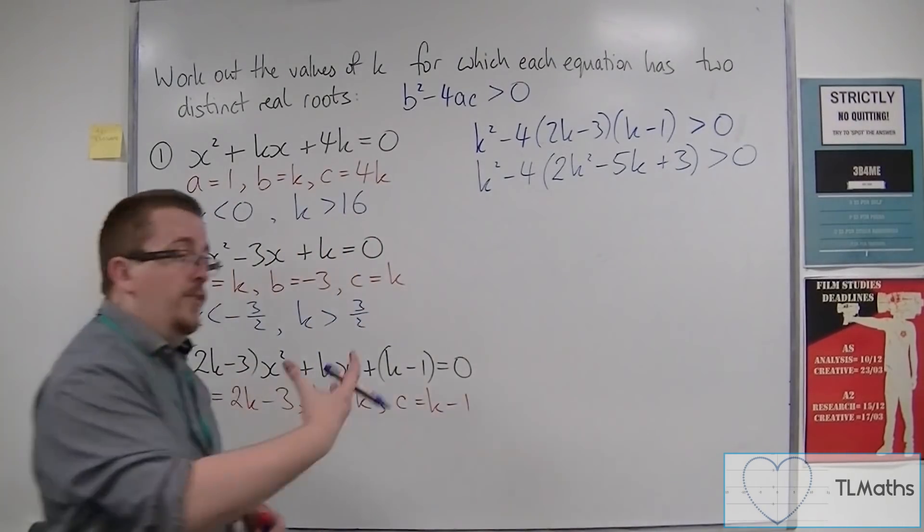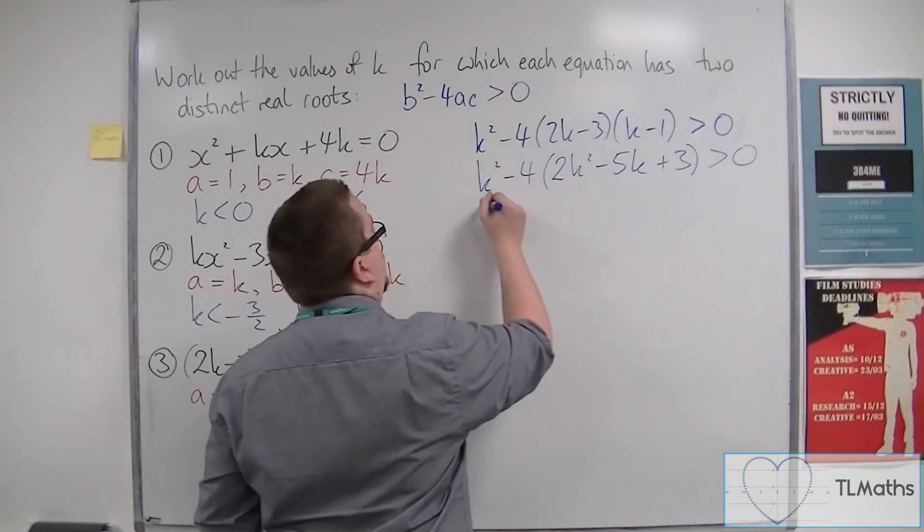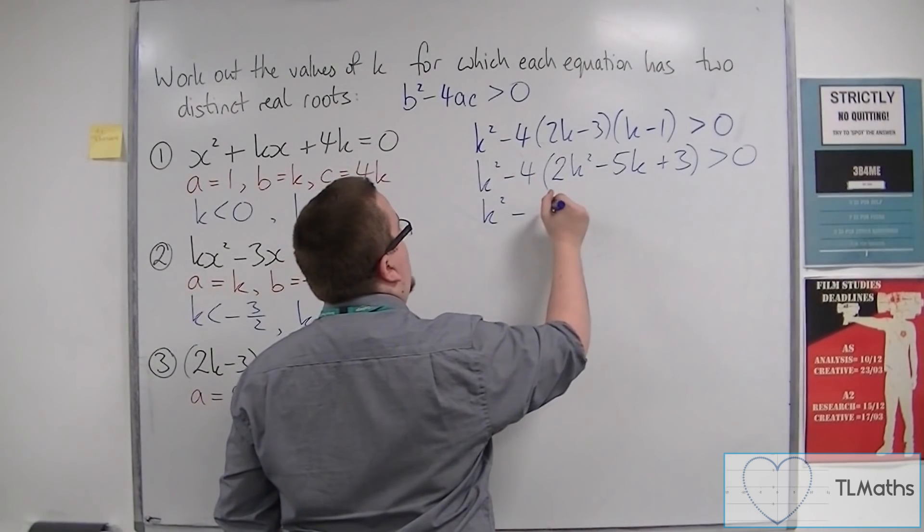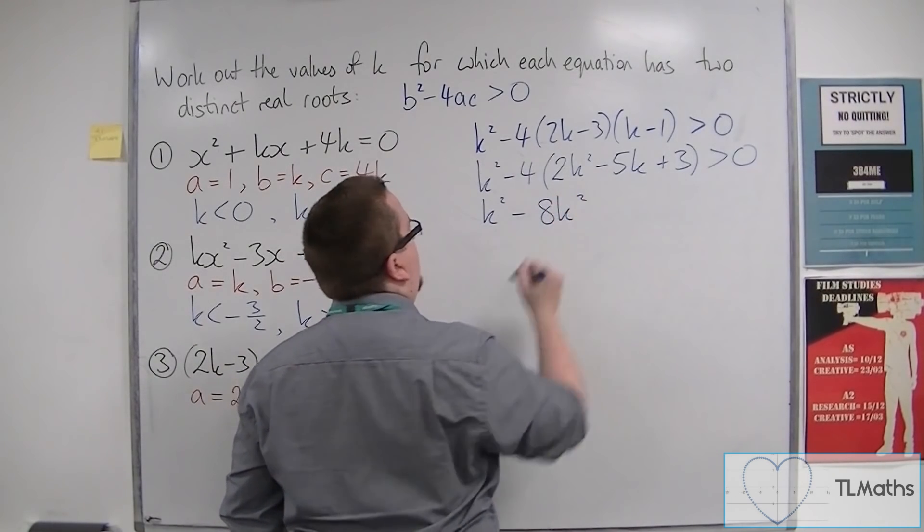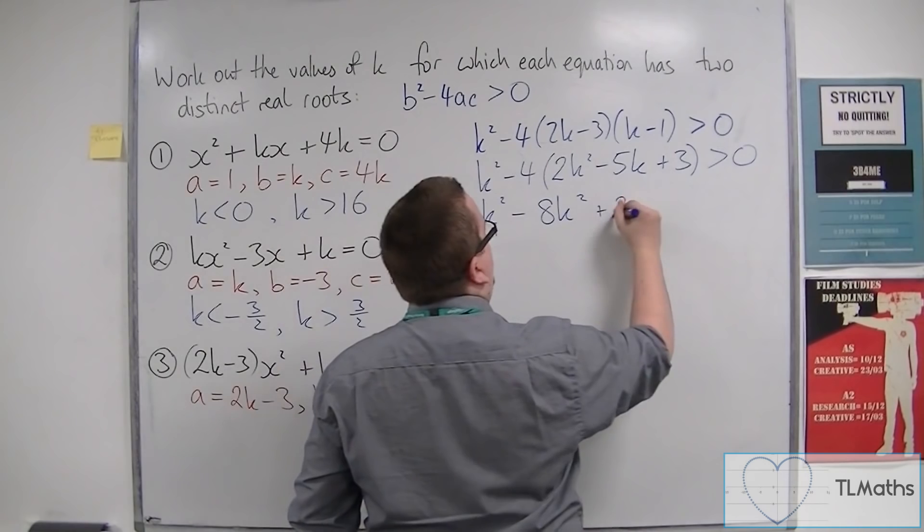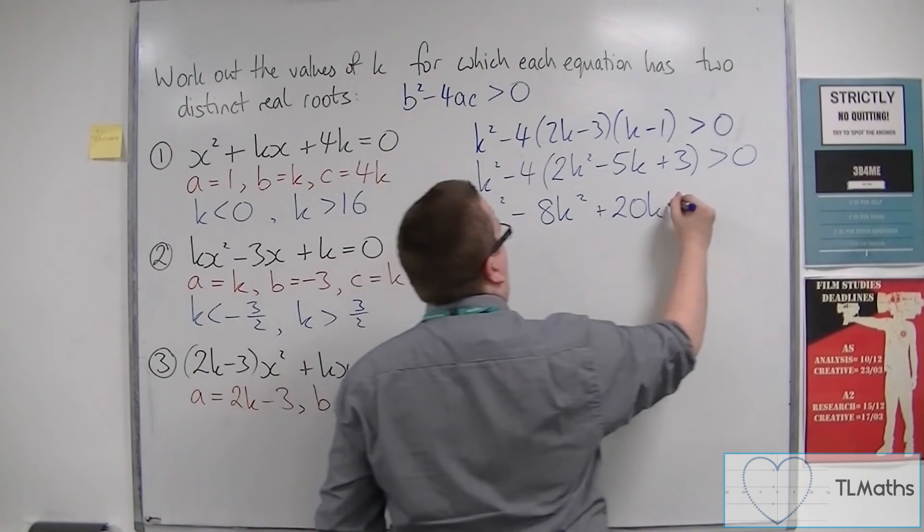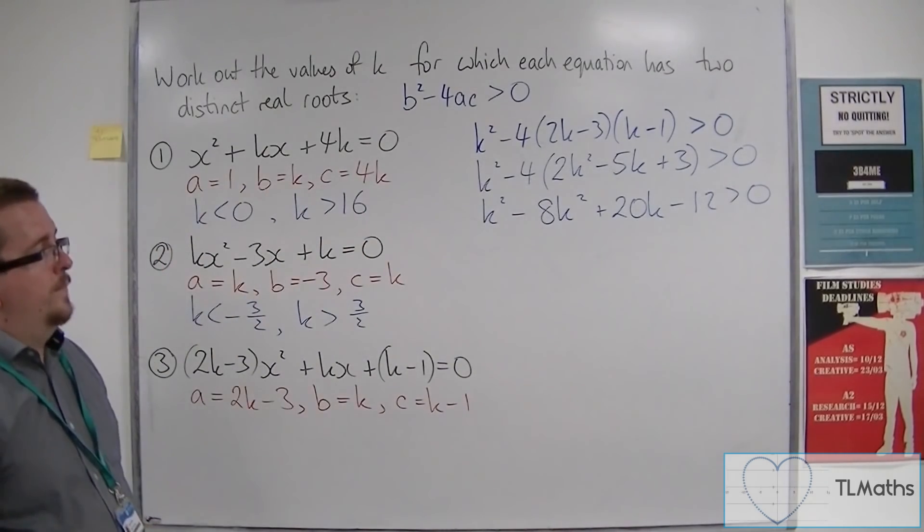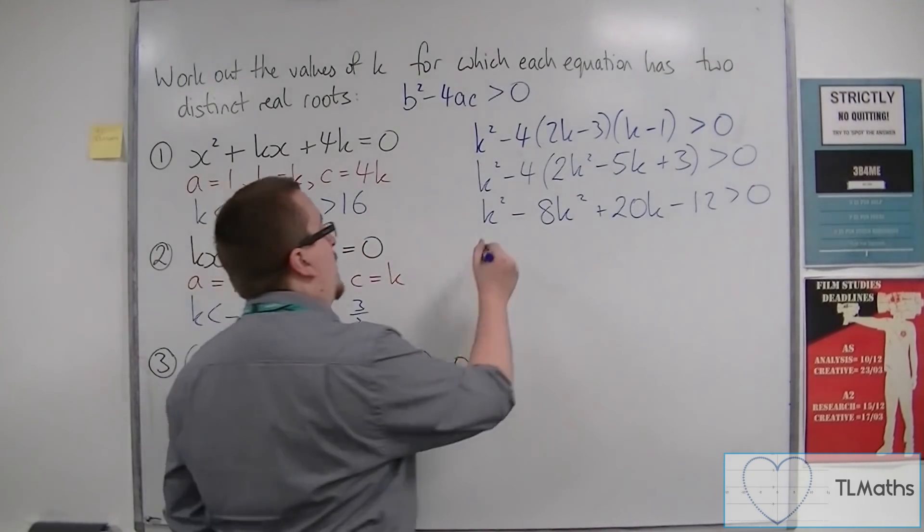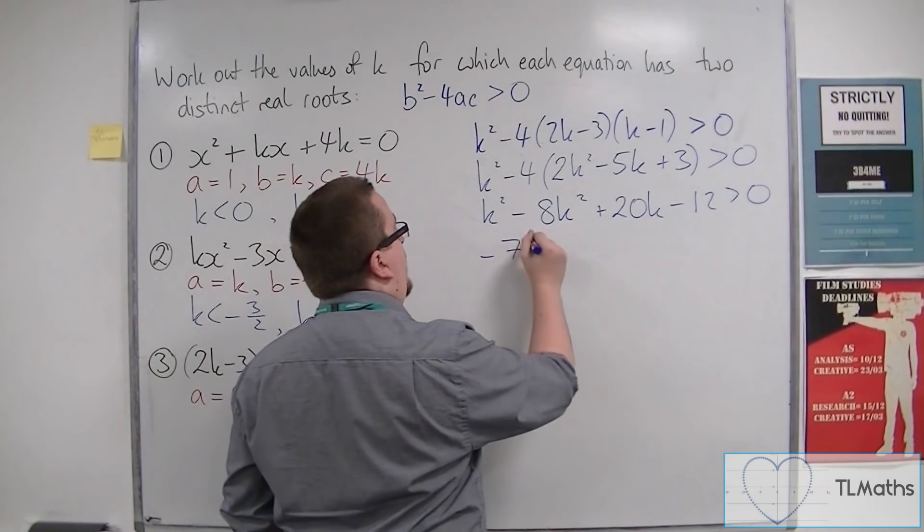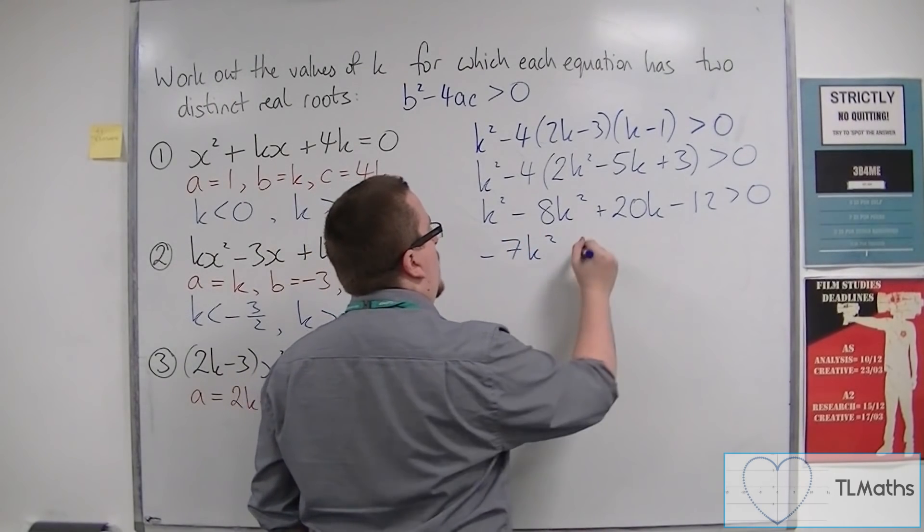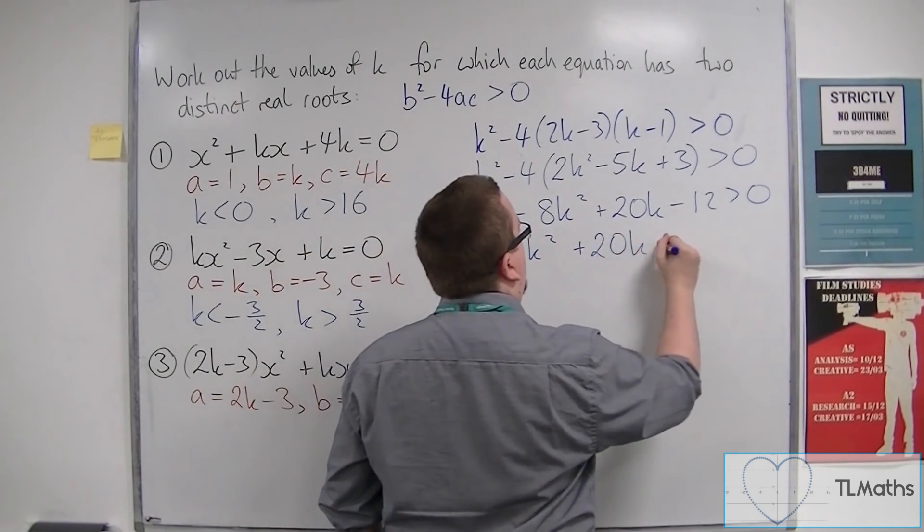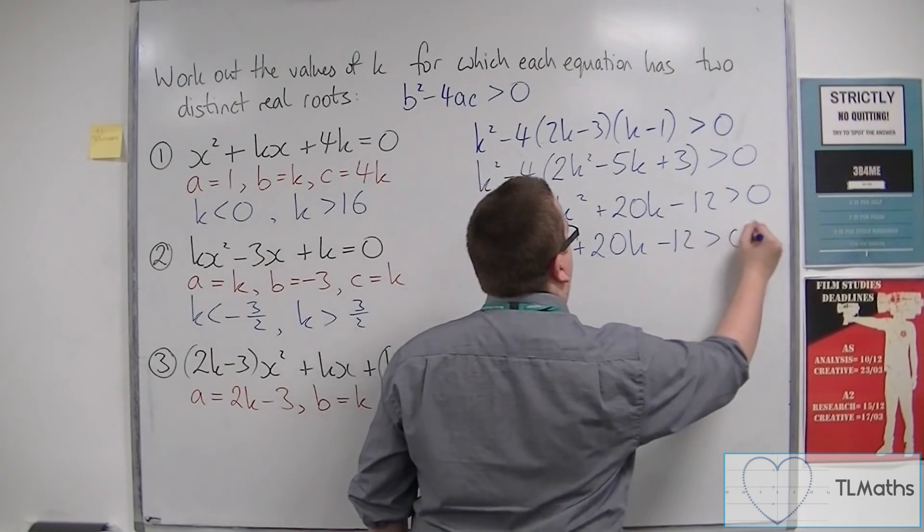Now you can expand through, multiply out through the minus 4. So k squared minus 8k squared plus 20k minus 12 is greater than zero. So this becomes minus 7k squared plus 20k minus 12 is greater than zero.